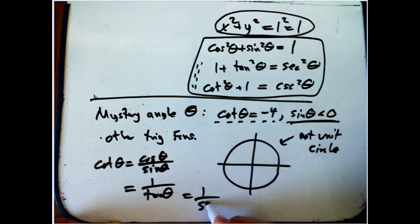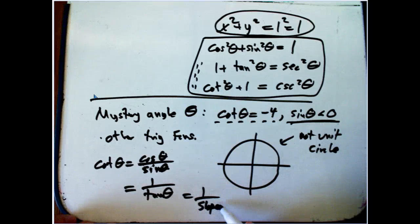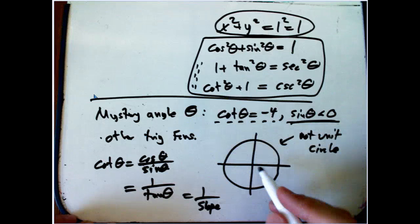And so that means it's 1 over the slope of the line we would draw through the origin at that angle. Okay, I know our slope is negative. That's going down like this, and so it's going to be here. It's going to be a quadrant 4. Okay.